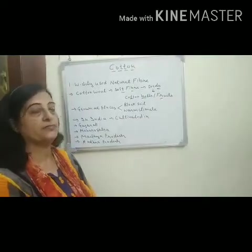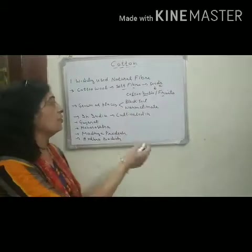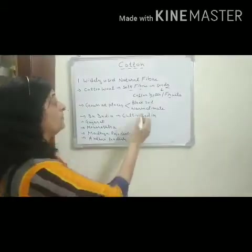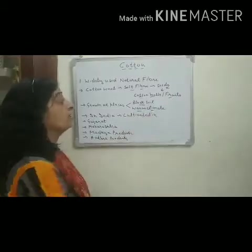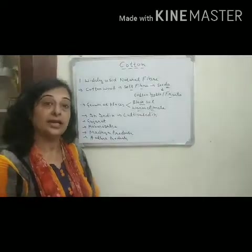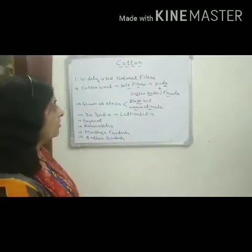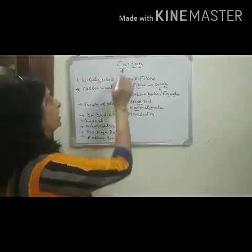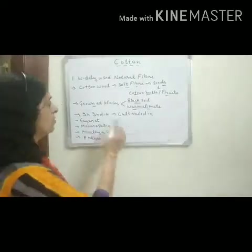Cotton plants are grown in fields, at places which have black soil and warm climate. Black soil and warm climate is good for growing the cotton plant.